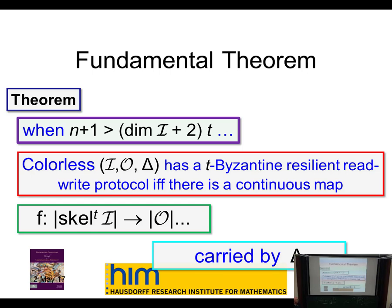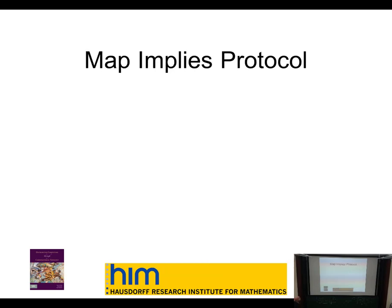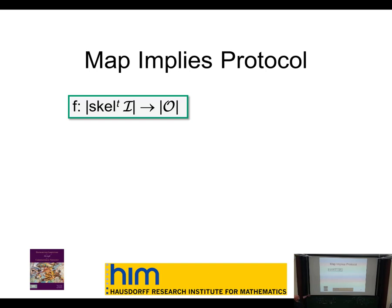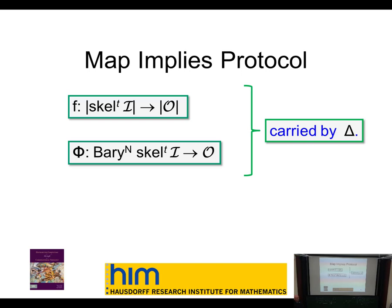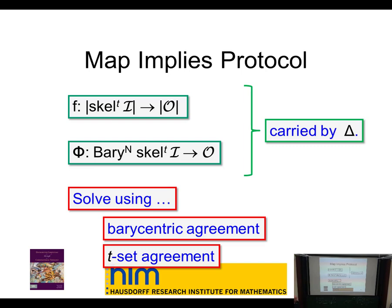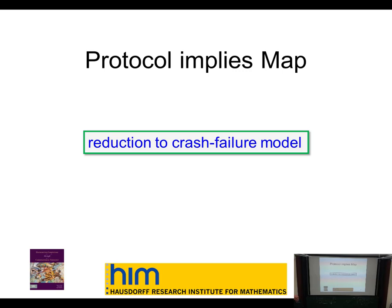All that says is: if the number of Byzantine processes is small enough, it's not essentially different from the crash failure case, even though superficially the adversary is much more fearsome. The only advantage the adversary has is that you need many more honest processes to outvote the Byzantine ones. To build the protocol from the map: take a simplicial approximation of that map using some number of barycentric subdivisions (where N is the computational complexity), do barycentric agreement, and do t-set agreement to drop to the skeleton. For the other direction: if you have a Byzantine protocol, that's also a crash failure protocol, therefore you have a map.